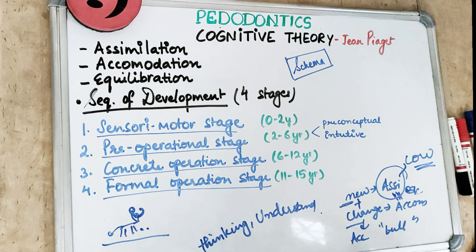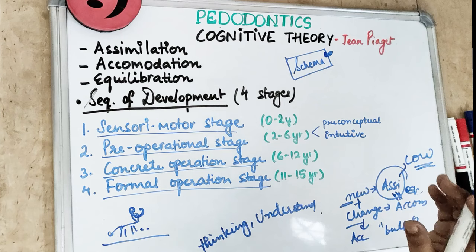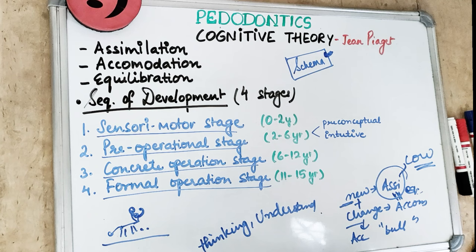Piaget calls these strategies schema — the concepts or strategies used to understand the world. The sequence of development is divided into four stages: the sensorimotor stage, pre-operational stage, concrete operational stage, and formal operational stage.